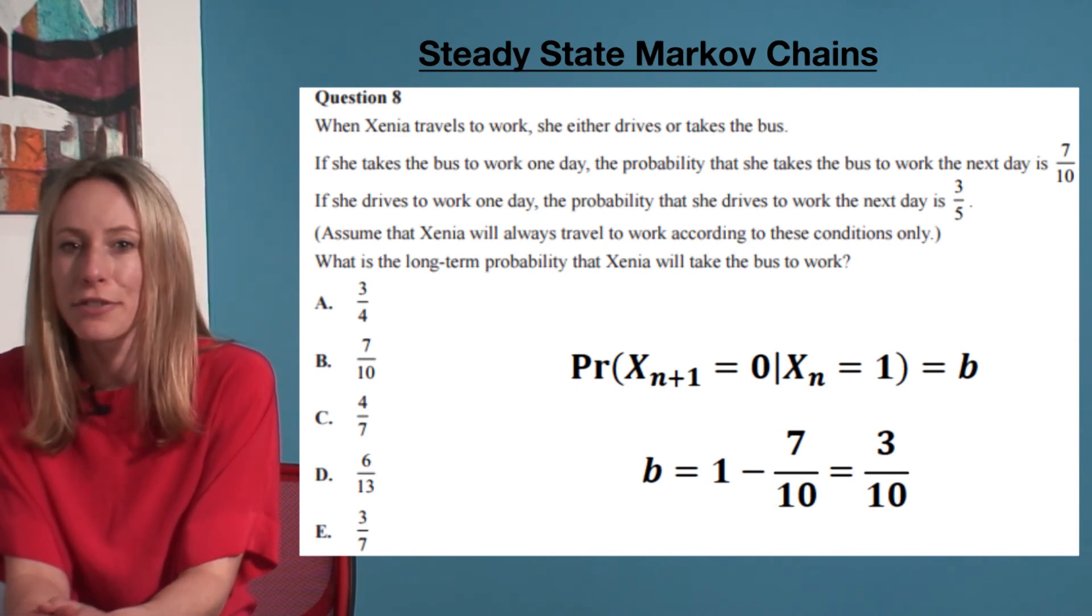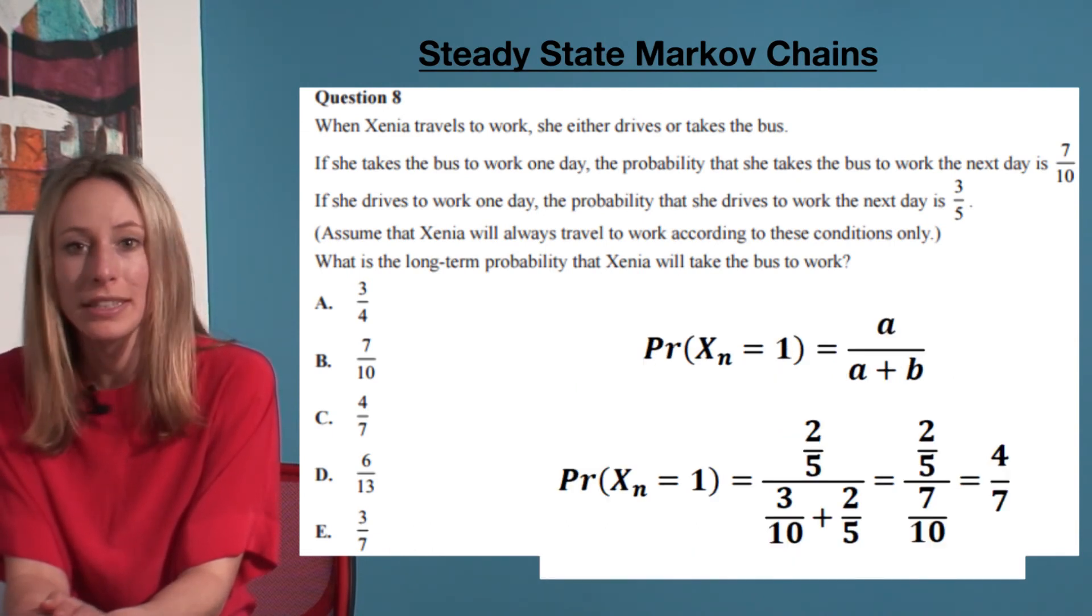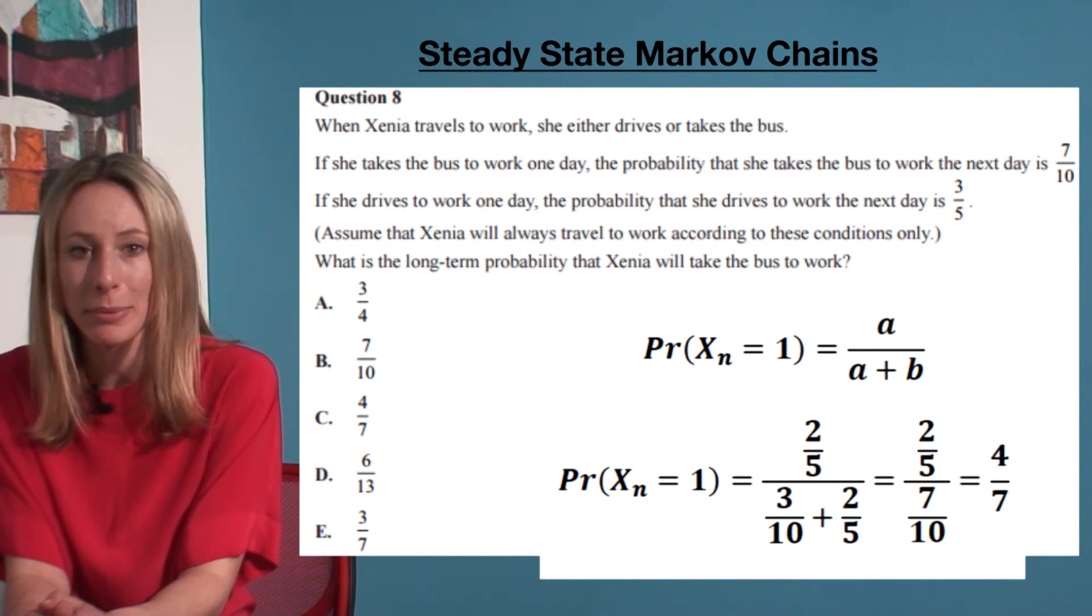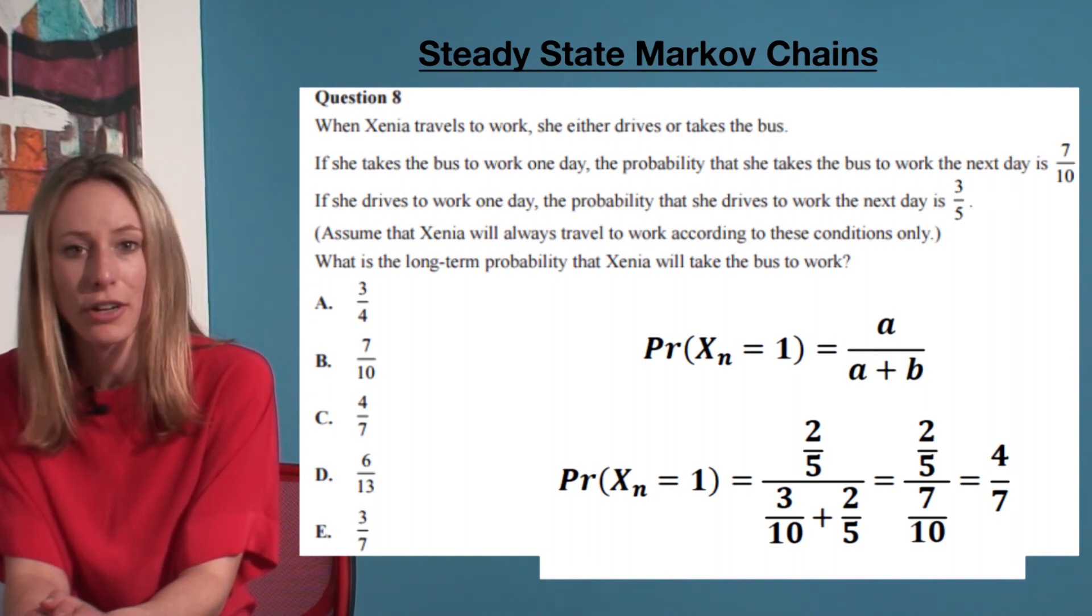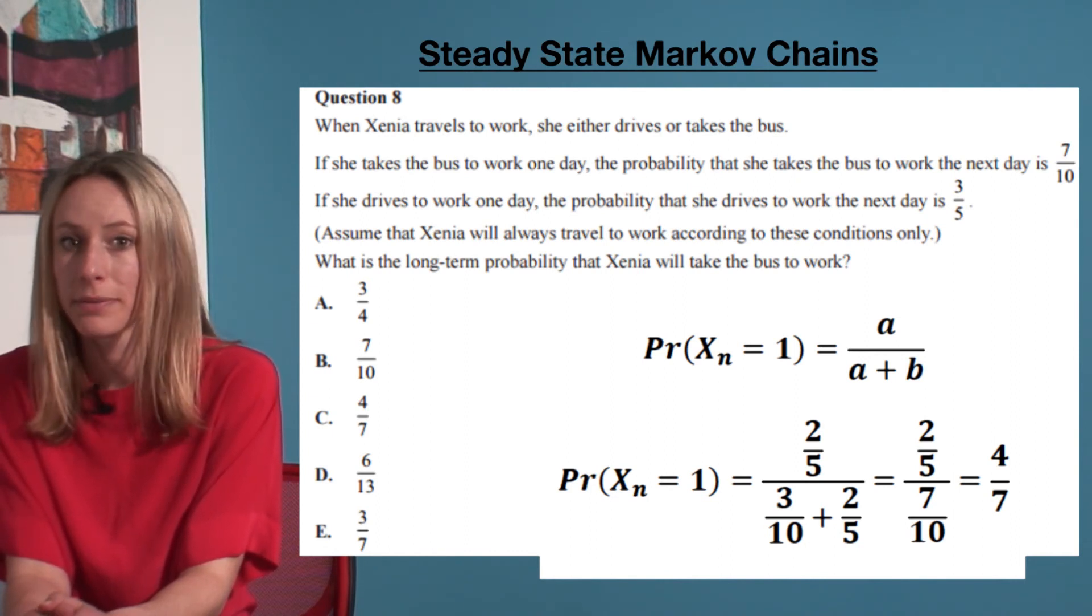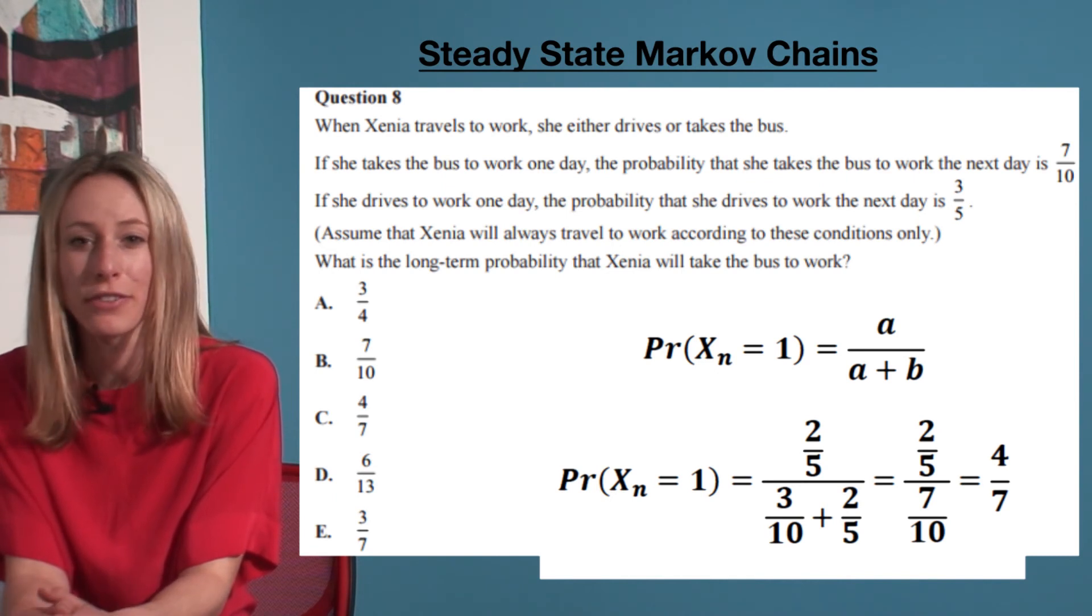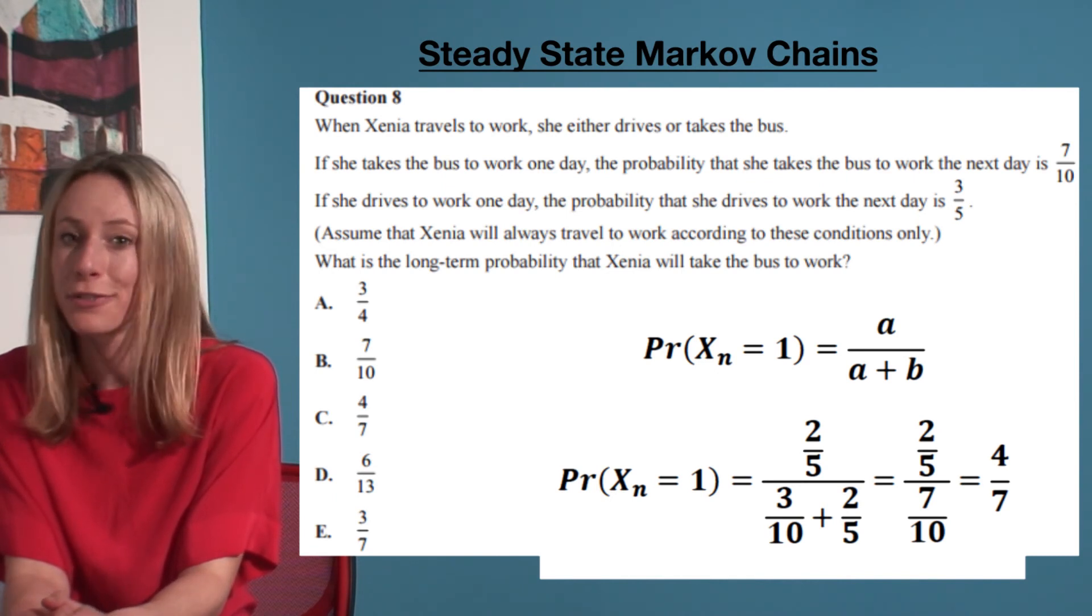Then we plug it into our equation for steady state. Probability of state one equals a over (a+b), which equals 2/5 over (3/10 + 2/5). That equals 2/5 over 7/10, which cancels down to 4/7.